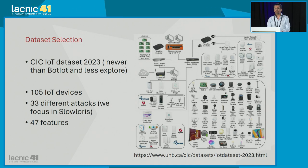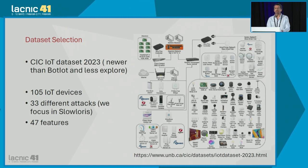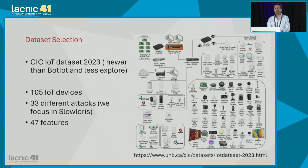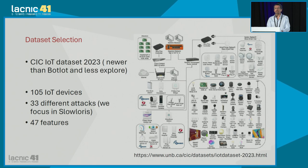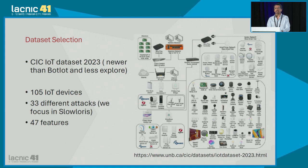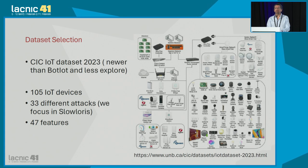With that aim we used a recent dataset. This dataset was created by the cybersecurity institute from Canada; it is publicly available, created using 105 IoT devices with 33 different attacks launched. We selected Slow Loris, one of the most common slow attacks. This dataset consists of 47 features, including estimated averages and similar statistical measures.